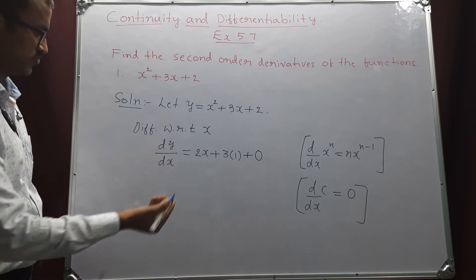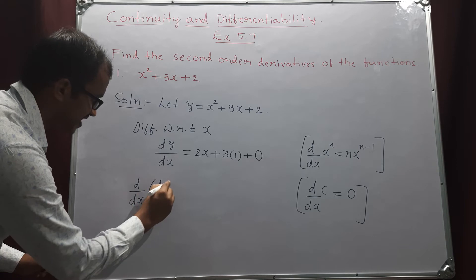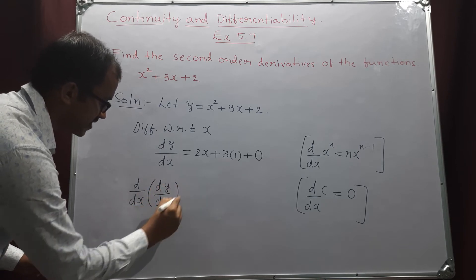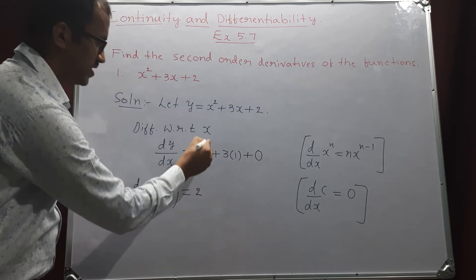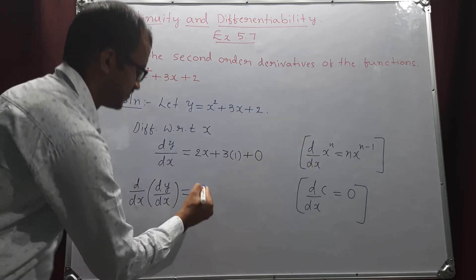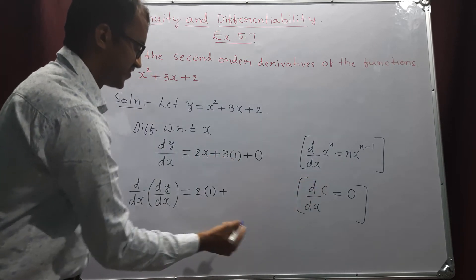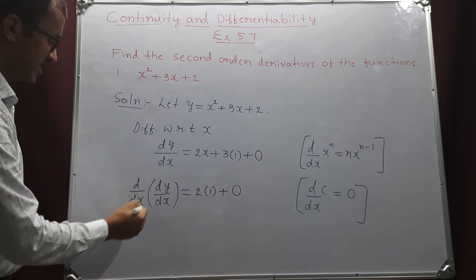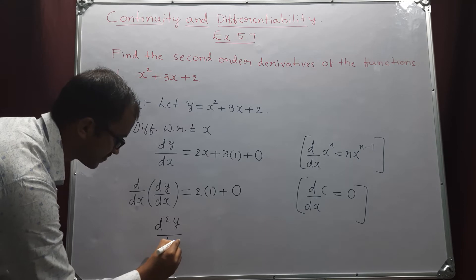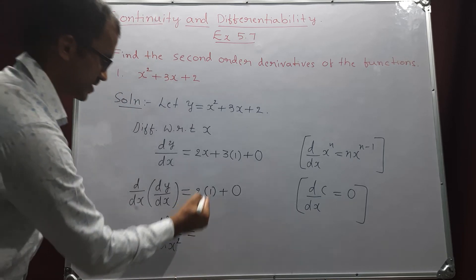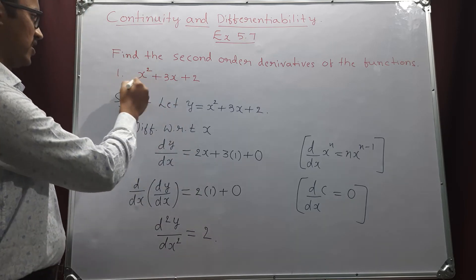Differentiating one more time with respect to x, d by dx of dy by dx equals: 2 is constant so differentiation of x gives 1, and 3 is a constant so differentiation of the constant is 0. Therefore d squared y by dx squared equals 2. This is the second order derivative of the given function.